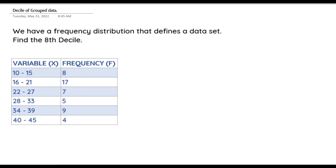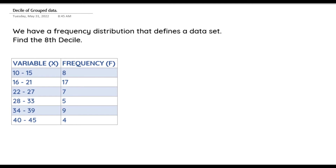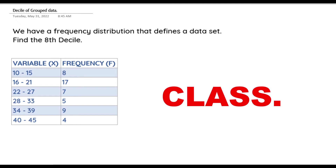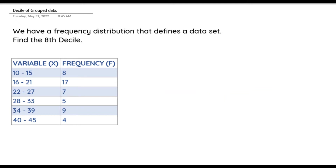This data set is grouped based on class because the values 10 to 15, 16 to 21, 22 to 27, down to 40 to 45 are all known as classes. In each of those classes we have the upper class limit and the lower class limit — 10 is the lower class limit and 15 is the upper class limit.